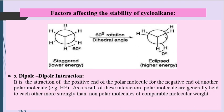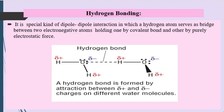In the eclipsed conformation, atoms are maximally close to each other, so energy increases. Any deviation from staggered conformation causes torsional interaction and decreases stability. The third factor is dipole-dipole interaction — the attraction between the positive end and negative end of polar molecules. As a result, polar molecules are generally held together more strongly than non-polar molecules of comparable molecular weight.